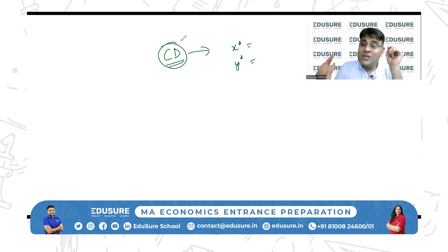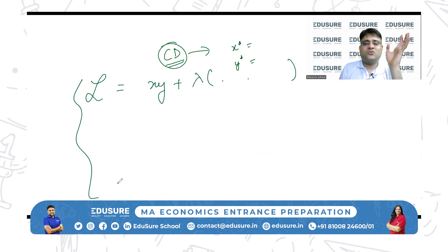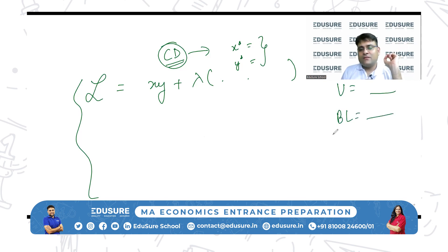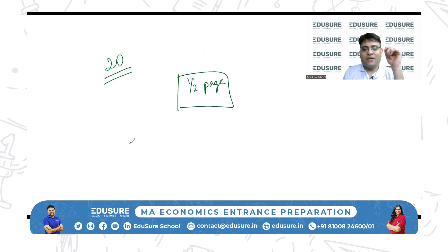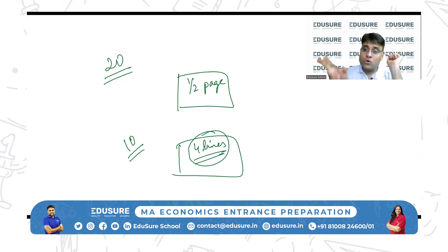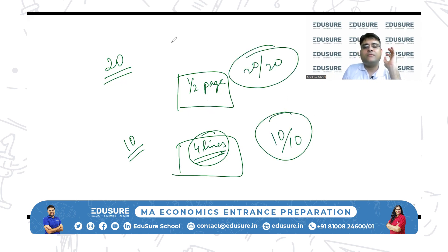There is a shortcut formula for Cobb-Douglas — use the shortcut formula. Do not write the full Lagrangian setup with all the intermediate steps. If you already know the shortcut formula, write the utility function, write the budget line, and state: 'We know the result of the shortcut formula for Cobb-Douglas, hence X* is this, Y* is this.' You don't have to write any story. They have many papers to correct — write to-the-point answers. Even for a 20-mark question, you might write only half a page; for a 10-mark question, only four lines.